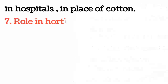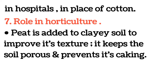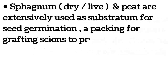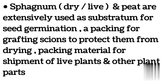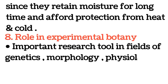Seven: role in horticulture. Peat is added to clay soil to improve its texture. It keeps the soil porous and prevents caking. Since peat is one of the important sources of humus, it is used to increase fertility and also improves the water-holding capacity of the soil. Sphagnum, dry, live, and peat, are extensively used as substratum for seed germination, as packing for grafting scions to protect them from drying, and as packing material for shipment of live plants and other plant parts, since they retain moisture for a long time.